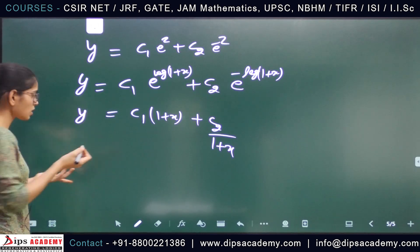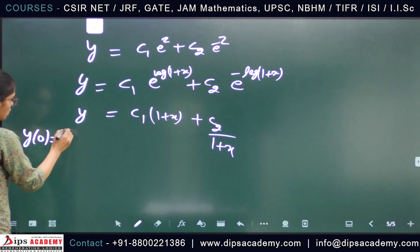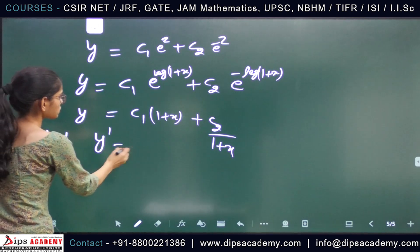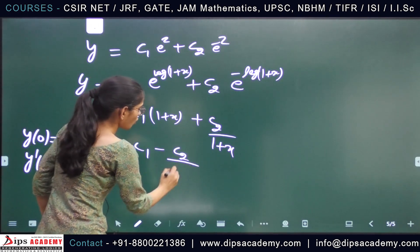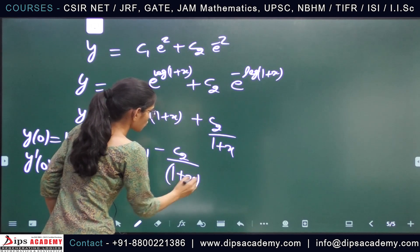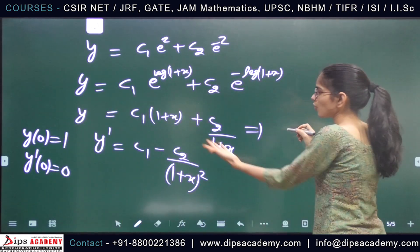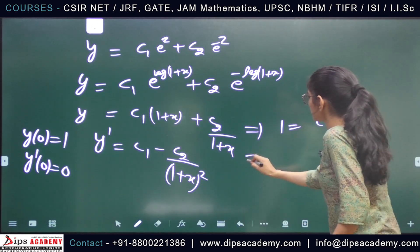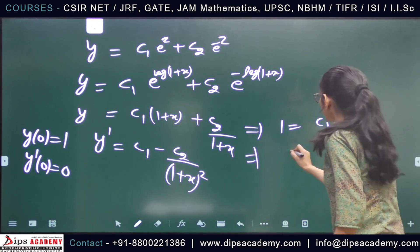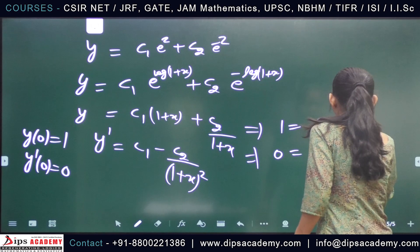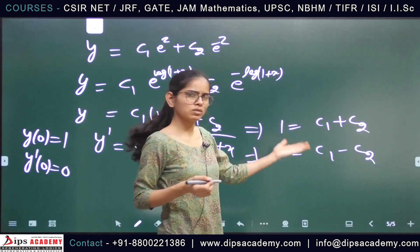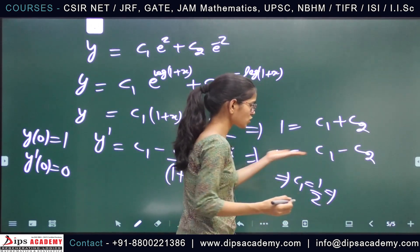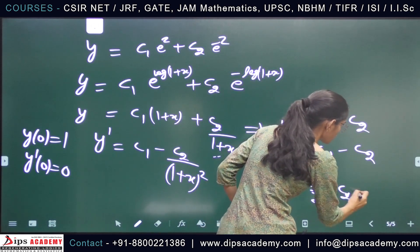Now applying the initial conditions y(0) = 1 and y'(0) = 0. First, y'(x) = c₁ - c₂/(1+x)². From y(0) = 1 we get c₁ + c₂ = 1. From y'(0) = 0 we get c₁ - c₂ = 0, so c₁ = c₂. Solving both equations gives c₁ = c₂ = 1/2.